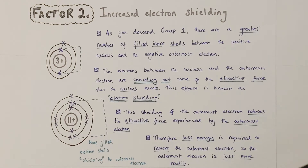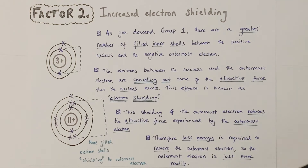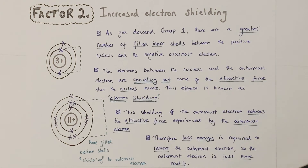The two factors to consider when looking at reactivity are distance from the nucleus and the shielding effect. The greater the distance of an outermost electron from the nucleus, the less strongly it will be attracted to that nucleus and the more easily it will be lost. And the greater the number of inner filled electron shells between the outermost electron and the nucleus, the greater the shielding effect, and the weaker the attraction of the outermost electron to that nucleus — meaning it will be lost more readily with less energy and that metal atom will be more reactive.